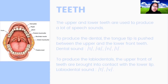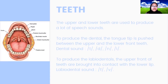The tongue touches the upper teeth to produce dental sounds. And to produce the labiodental sounds, the upper front teeth are brought into contact with the lower lip, and the labiodental sound is V.